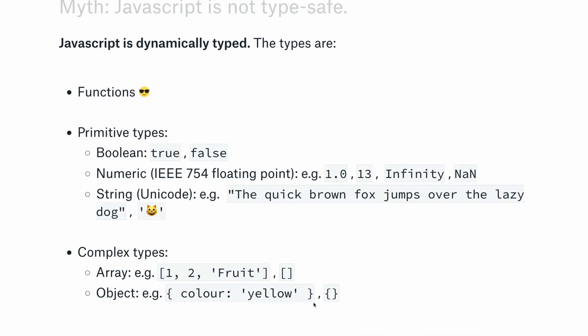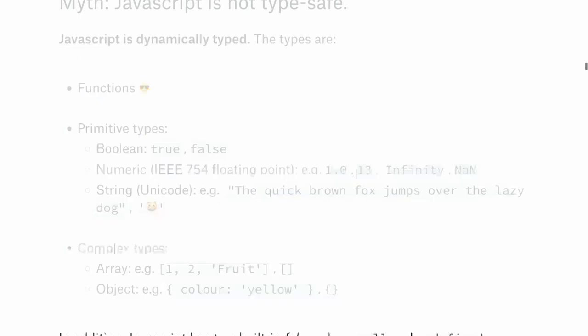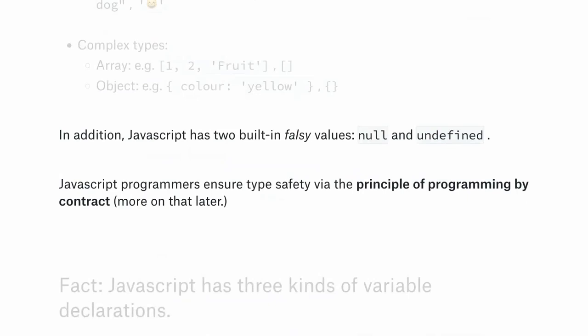JavaScript also has two built-in falsy values that evaluate to false in an if-condition: null and undefined. Null is used to pad variables out, and undefined happens when you try to access something that hasn't been defined yet. JavaScript ensures type safety via the principle of programming by contract, which I'll get to later — it's directly borrowed from the Python community.